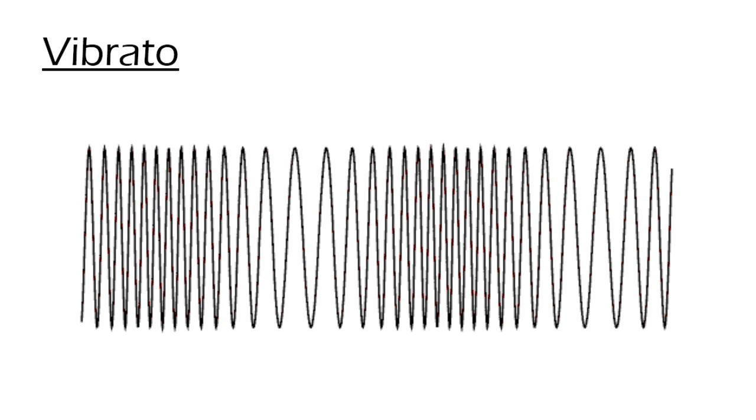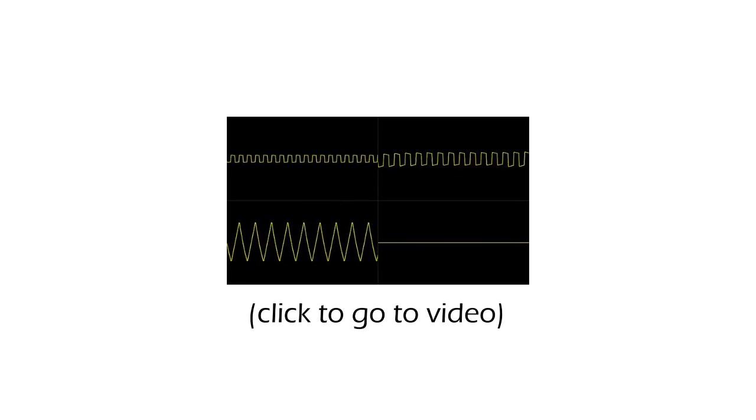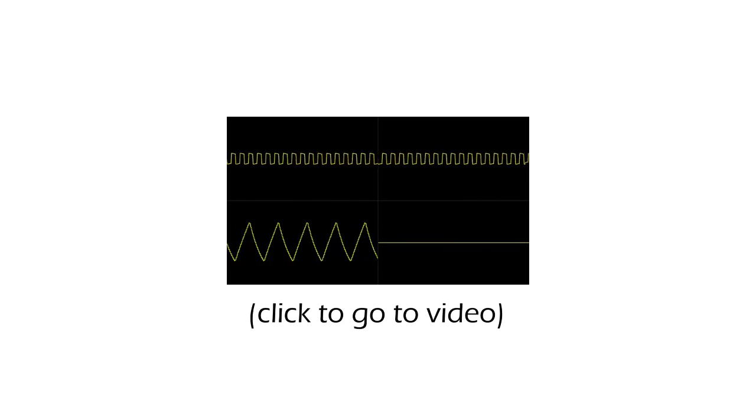The vibrato seen in the graph is exaggerated, so that the effect can be observed, since the variation would hardly be seen in a normal vibrato. A vibrato as the one seen in the image would be a vibrato of a random octave. In the video I recommended in the last episode, you can observe this effect in real life, where we can see that the variation in wavelength, and therefore, its frequency, is very small.